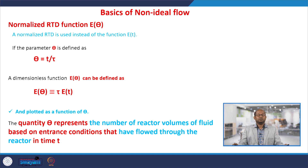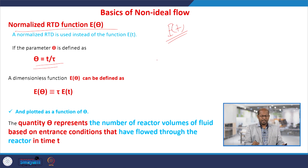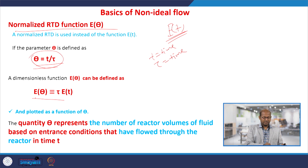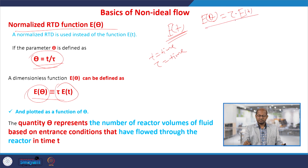Sometimes for the tracer test, or when comparing one reactor to another, or for the same reactor when we increase or decrease the volumetric flow rate of the feed, the responses come out different. For the same reactor, if we want to compare, we need to normalize the RTD functions. Instead of t, we write θ = t/τ, which is a dimensionless parameter. E(θ) = τ × E(t): if we know τ and E(t), we multiply them to get E(θ).